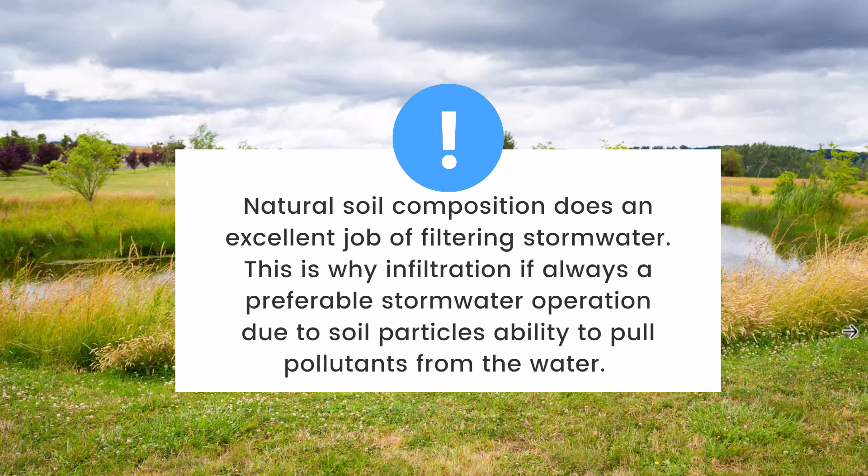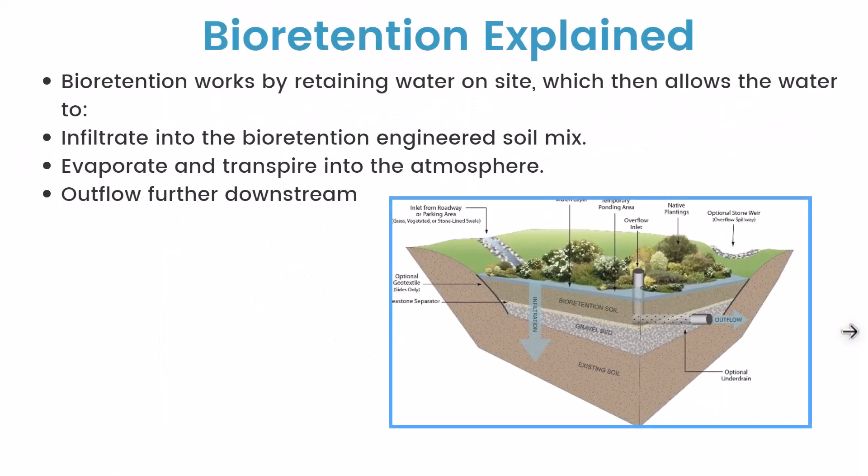In a natural environment sense, the soil layers do a really good job of pulling pollutants from the water. Bioretention works by retaining water on site, which then allows the water to either infiltrate into the bioretention engineered soil mix, evaporate and transpire into the atmosphere, or outflow further downstream. Those are the three options for where the water is going to end up going.